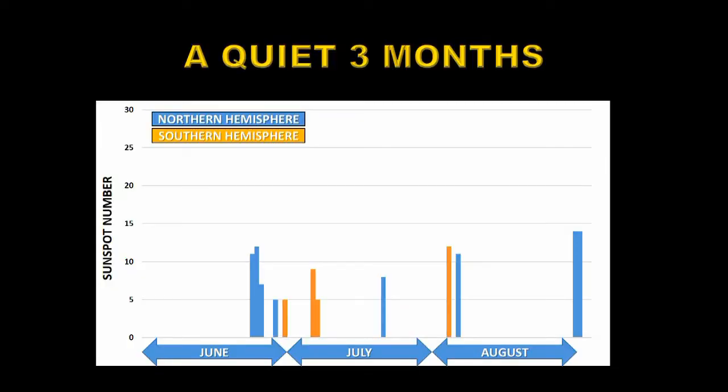As I said earlier, we've had a very quiet three months on the Sun. Here are the sunspot numbers for June, July, and August. I've marked in blue the regions that appeared in the Northern Hemisphere and in orange the regions that appeared in the Southern Hemisphere. A very interesting pattern emerges when you add to this plot which type of sunspots they were — whether they were old cycle or new cycle.